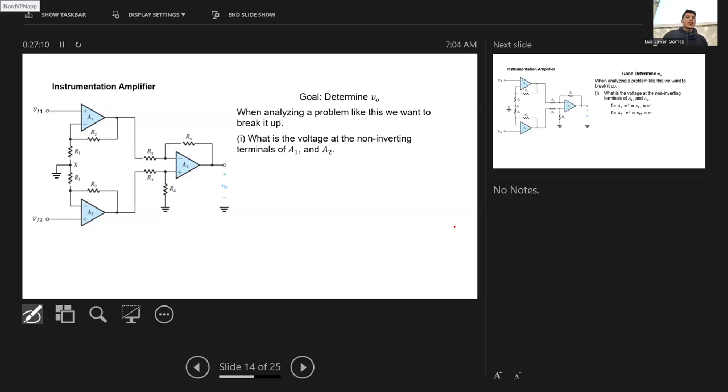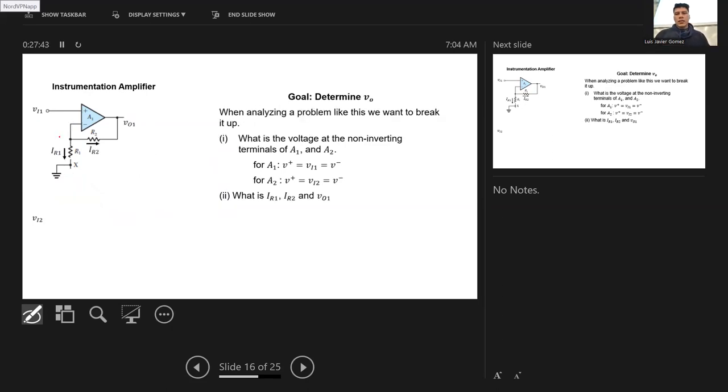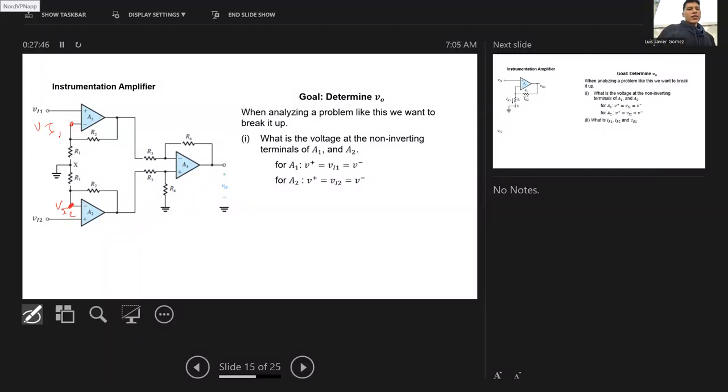When analyzing something like this, what we want to do is break it up into stages. We're going to first solve this circuit to figure out what the voltage will be here. Then we're going to solve this circuit to figure out what the voltage is here. In particular, we already know that the voltage here is going to be Vi2. Now that we know that, how much current goes into these two circuits? No current flows into here, and no current flows into here. So now we can actually figure out what the V out will be.